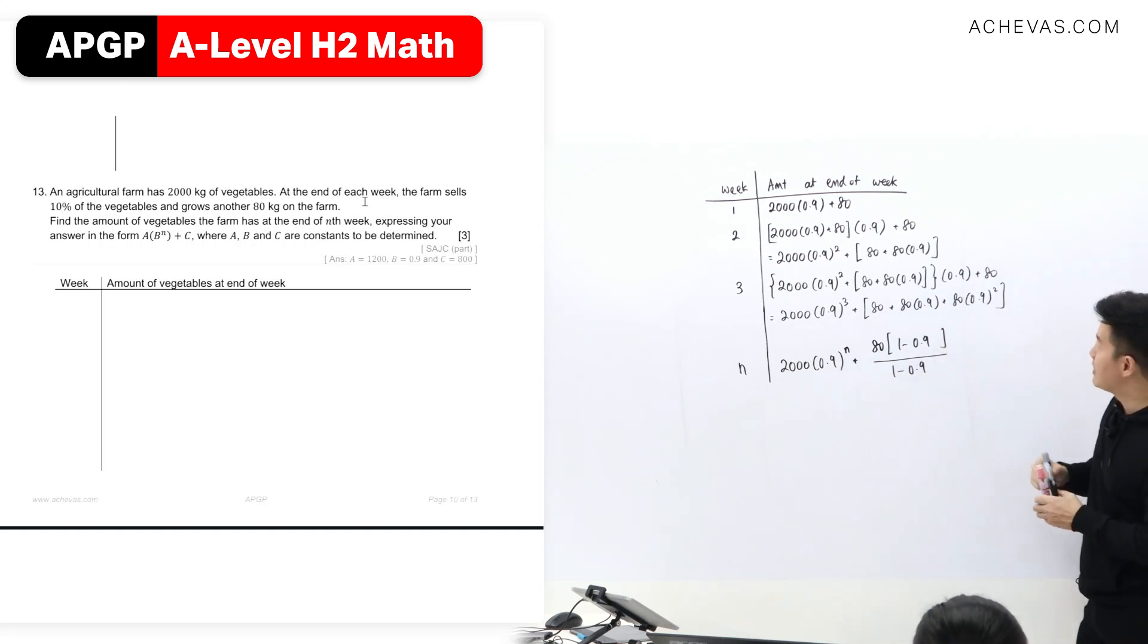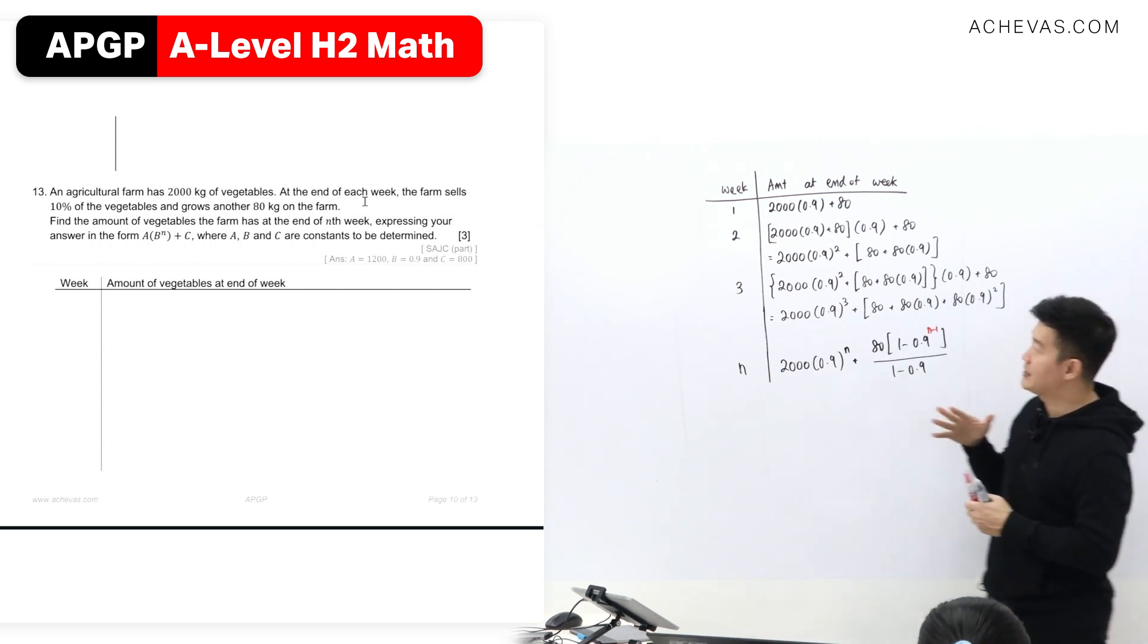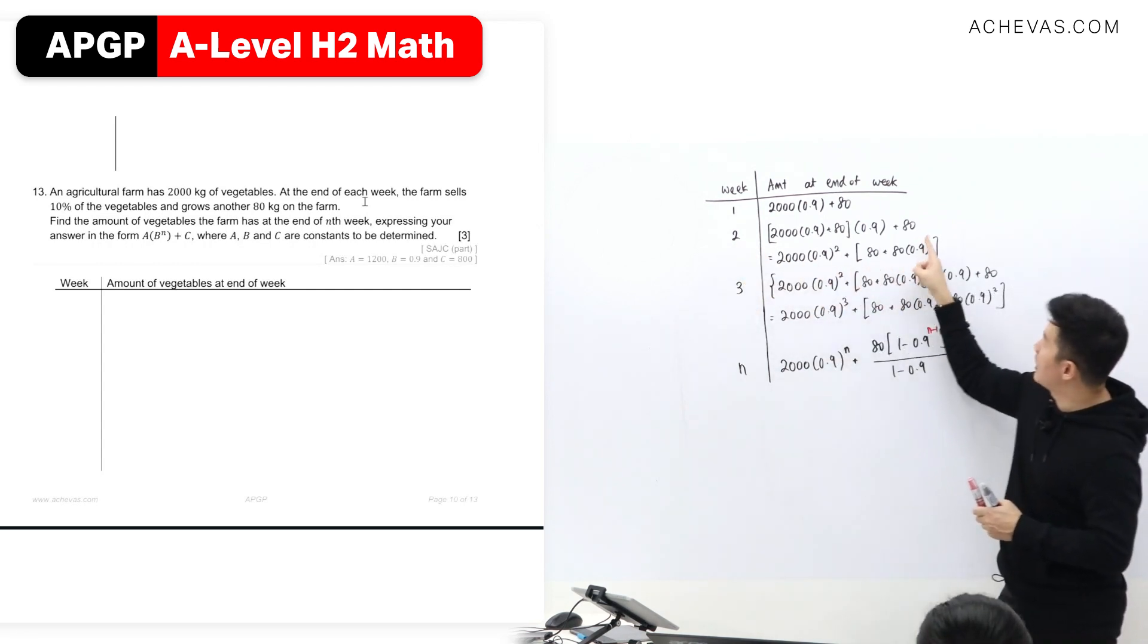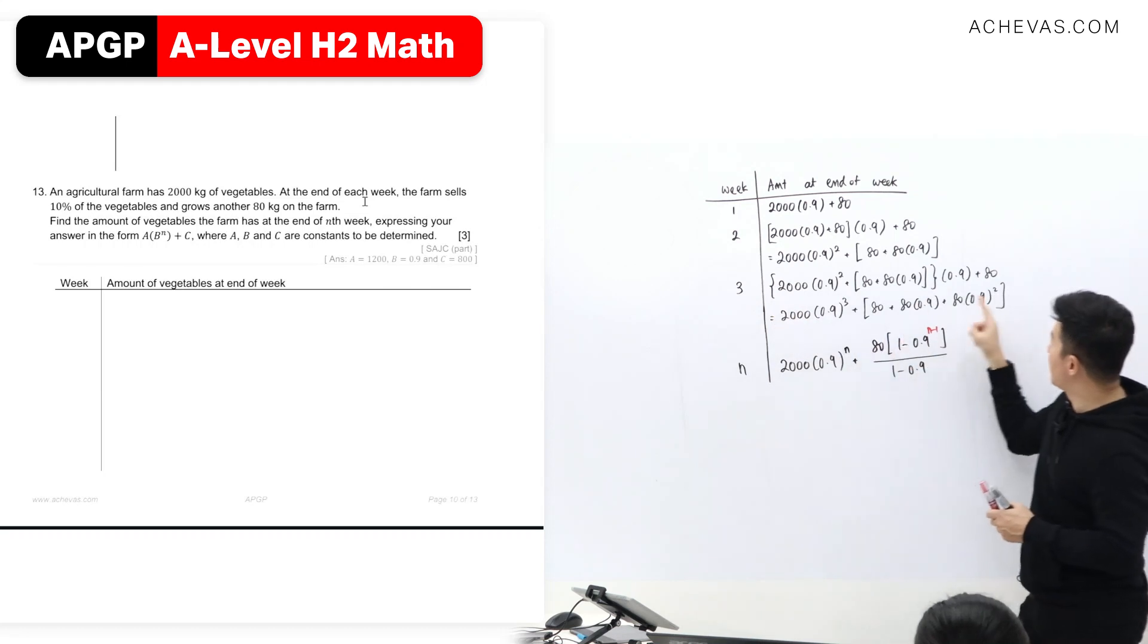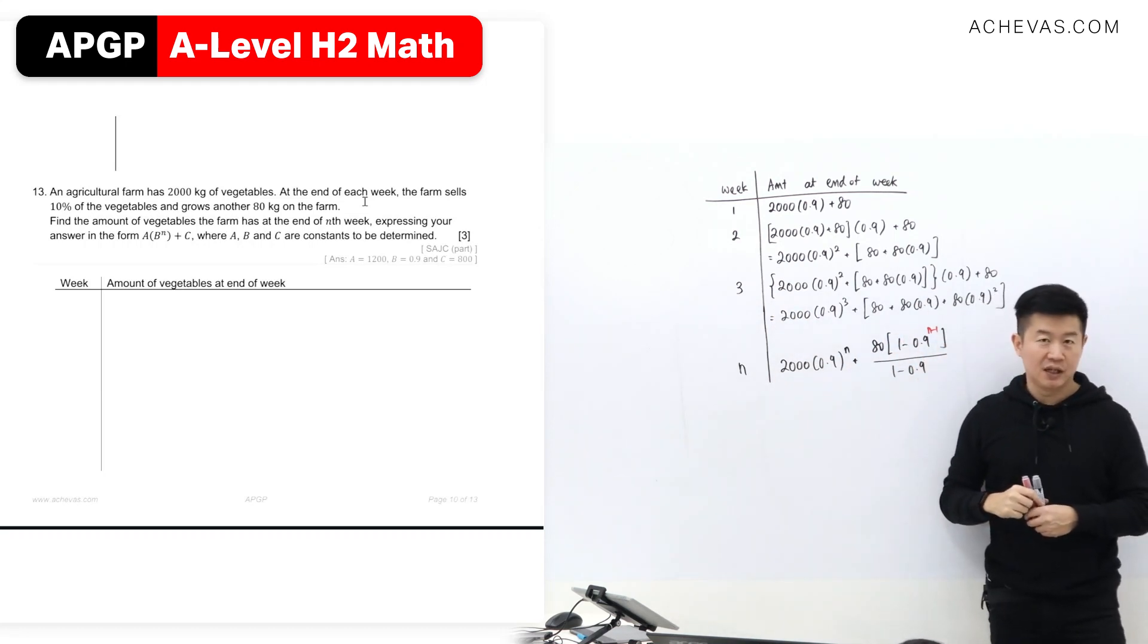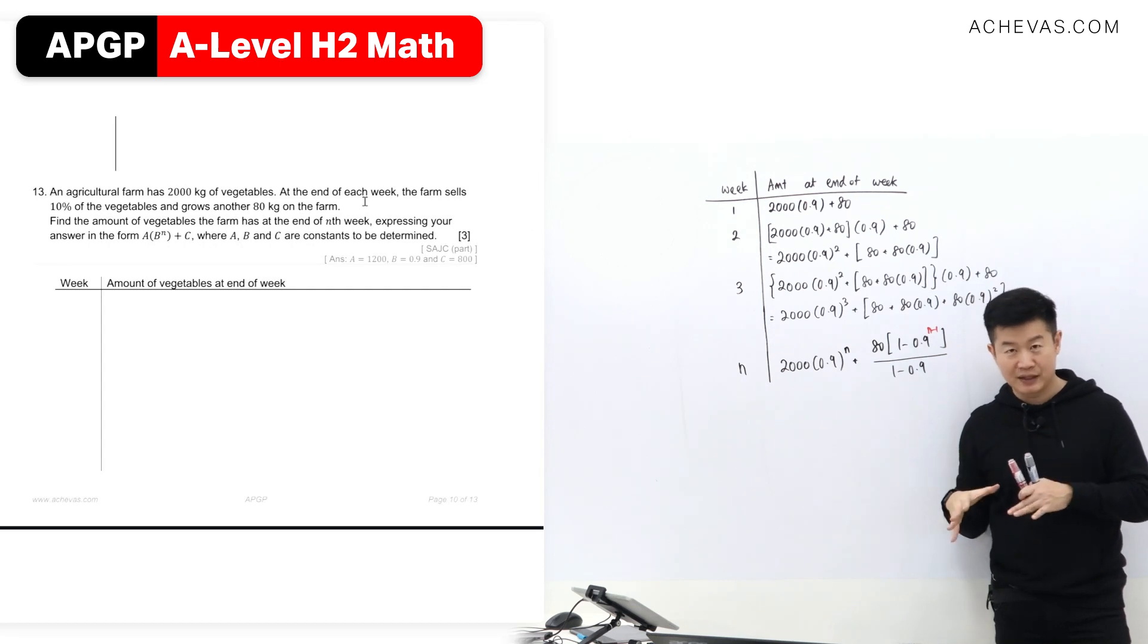Here, I think what some people may tend to do is to write this as n minus 1. Maybe, maybe. Okay, because some people see that it is 2, then power 1. 3, then power 2. So n, this must be power n minus 1.